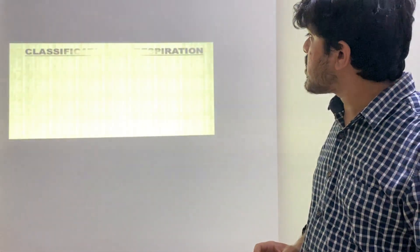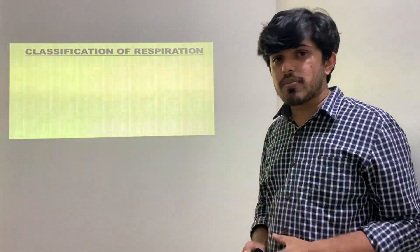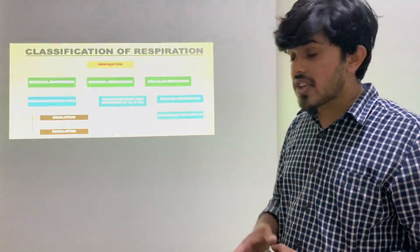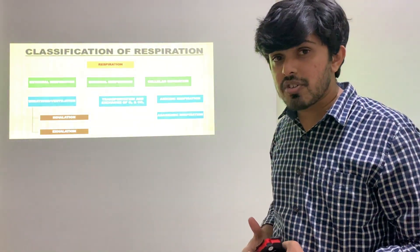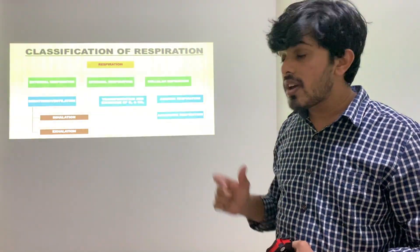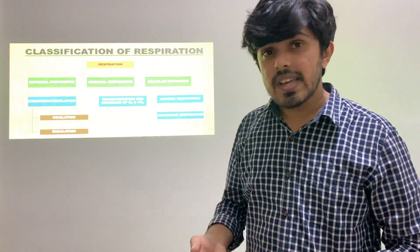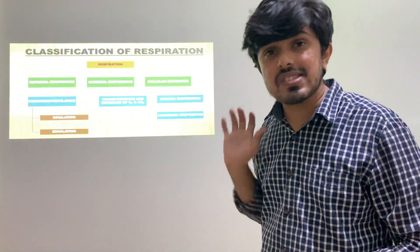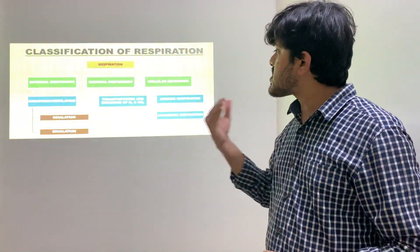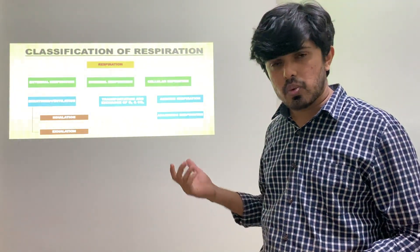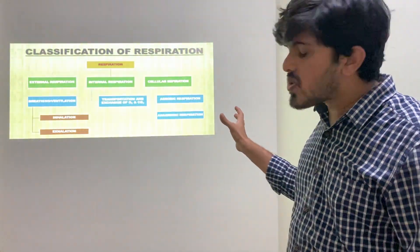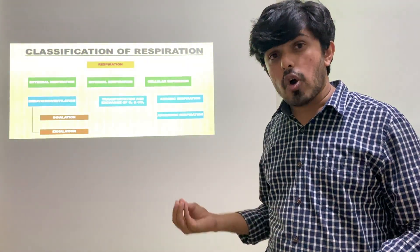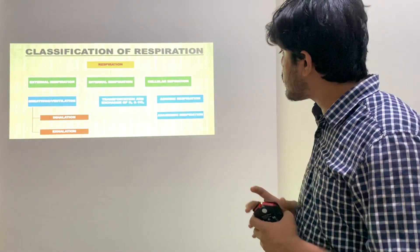So broadly, the classification of respiration: respiration is mainly of three types — external, internal, and cellular. External respiration is also called pulmonary respiration, which involves the breathing process. Breathing has two steps: inhalation and exhalation. External respiration will be discussed in detail in next lectures. Internal respiration involves transportation and exchange of oxygen and carbon dioxide. Cellular respiration will be covered in further chapters, and it is of two types: if oxygen is involved, aerobic; if oxygen is not involved, anaerobic.